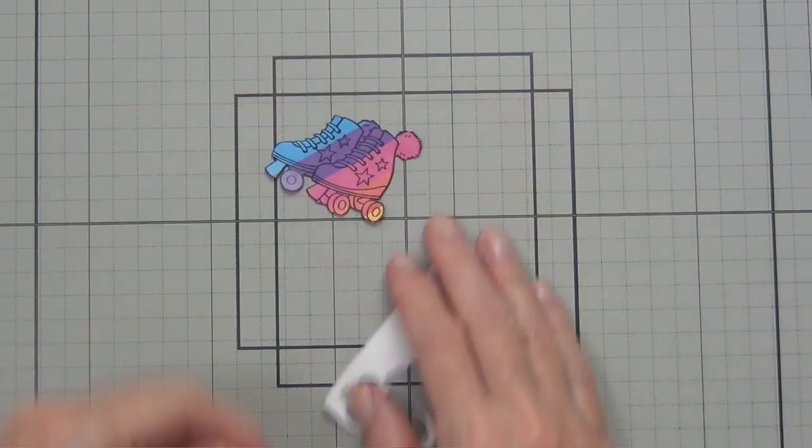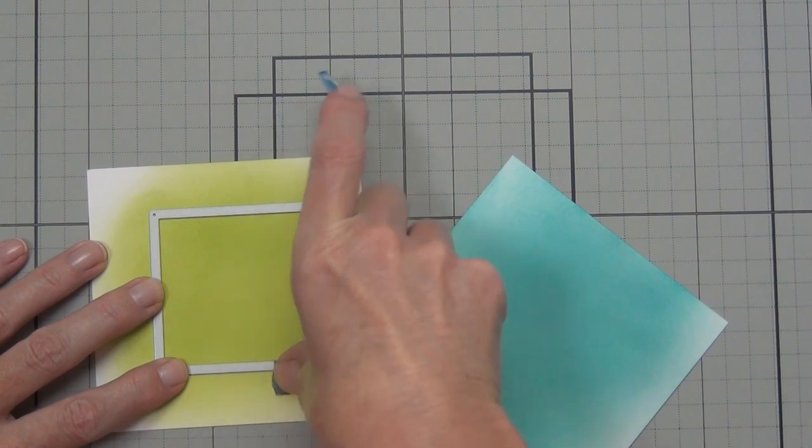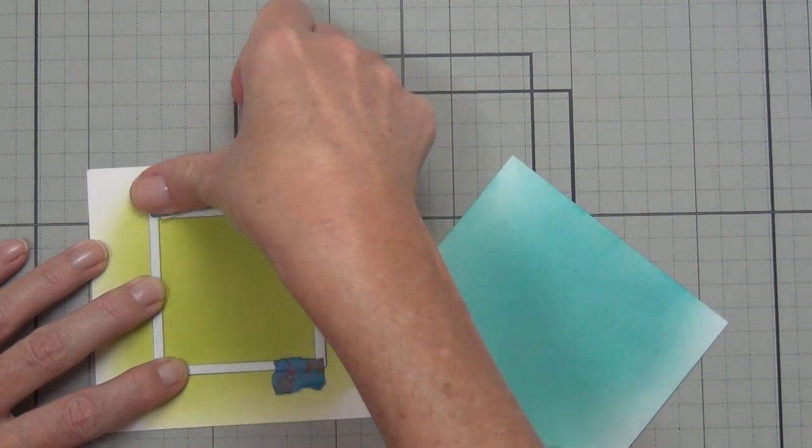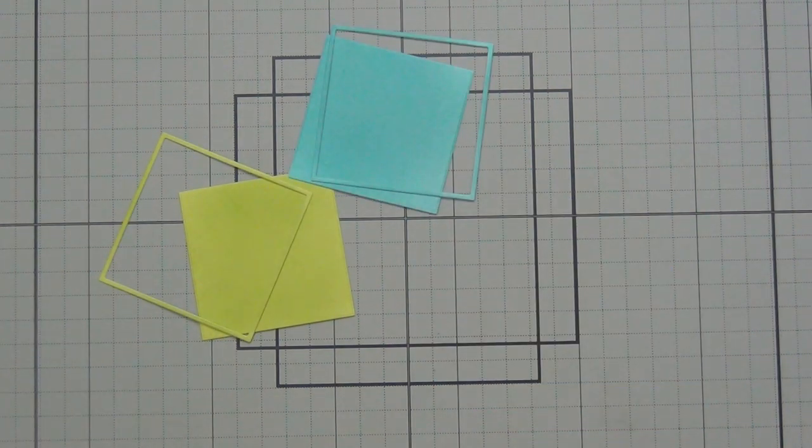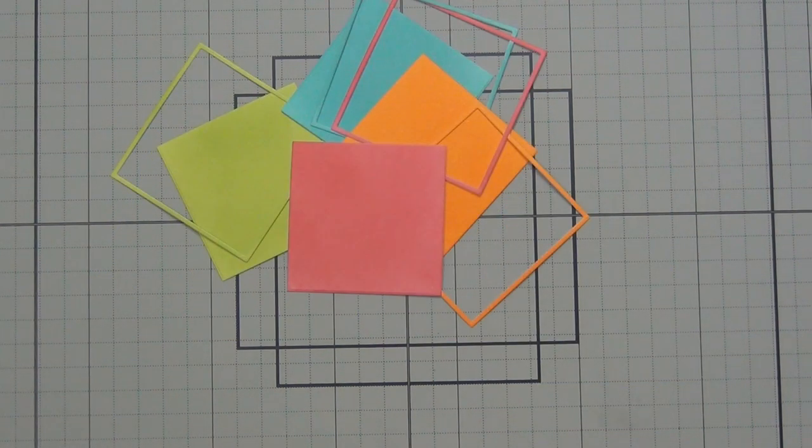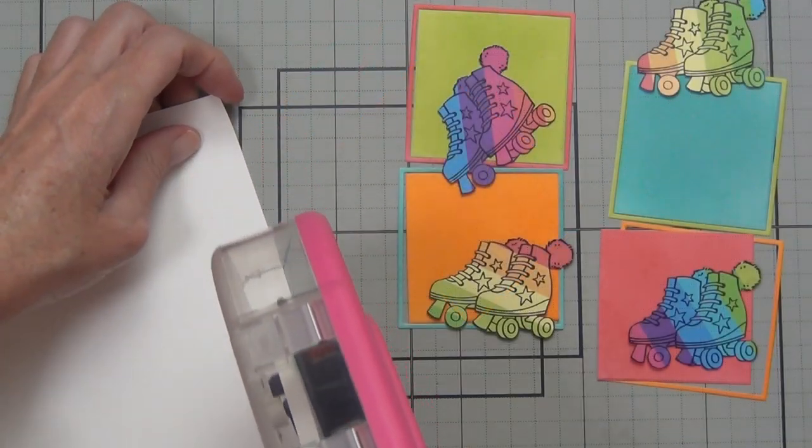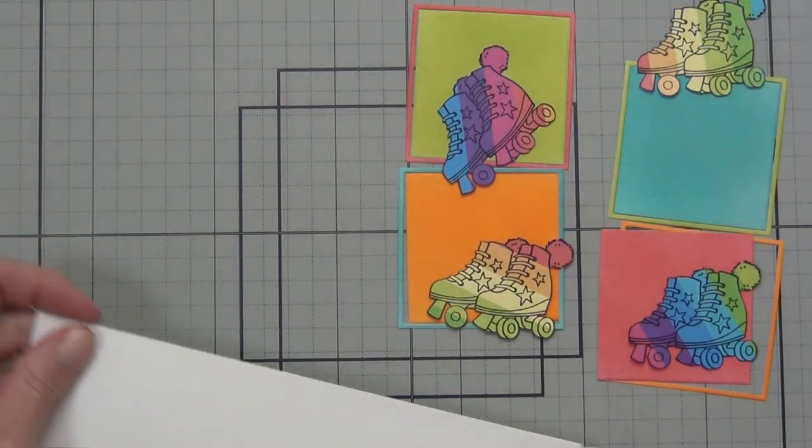But today I was going solid and bold. I die cut each of the colors with the Essentials Square set. I just chose the square that fitted the roller skates perfectly and cut all four different colors.